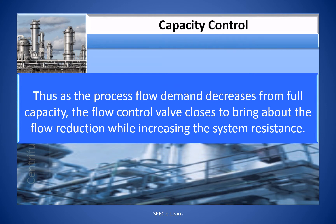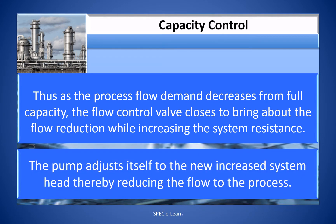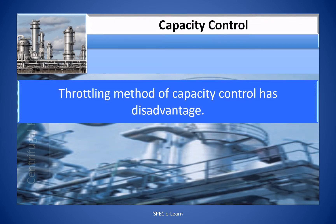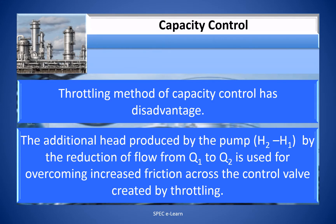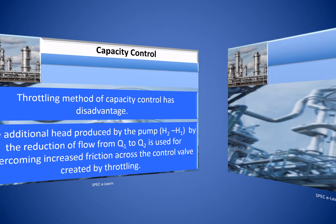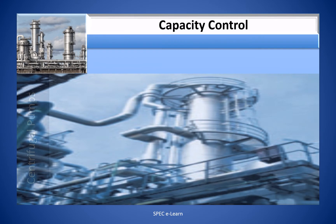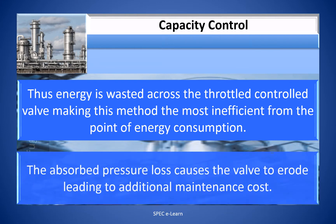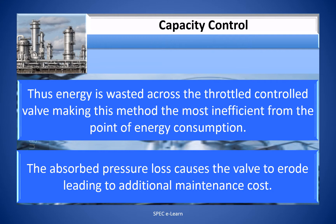As the process flow demand decreases from full capacity, the flow control valve acts to close, bringing about flow reduction by increasing the system resistance. The pump adjusts itself to the new increased system head, thereby reducing the flow to the process. The throttling method of capacity control has a disadvantage: the additional head produced by the pump H2−H1, from flow Q1 to Q2, is used for overcoming increased friction across the control valve. Thus, energy is wasted across the throttled control valve, making this the most inefficient method from the point of energy consumption. The absorbed pressure loss causes the valve to erode, leading to additional maintenance cost.